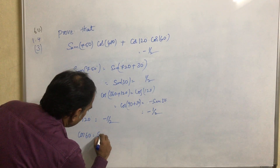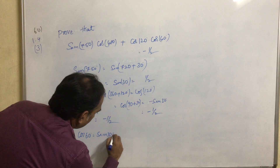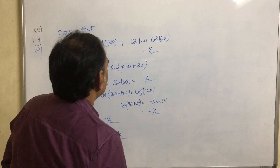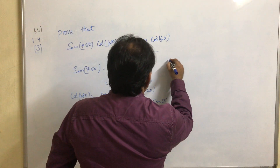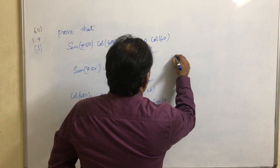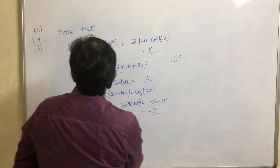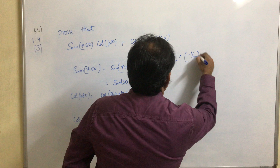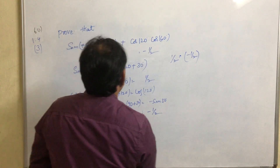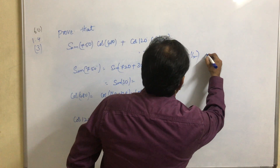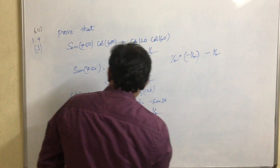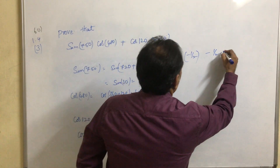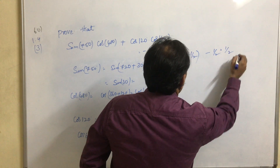cos120 equals minus 1 by 2, so no need to find it again. cos60 equals sin30, which equals 1 by 2. Substituting all values: sin750 = 1/2, cos480 = minus 1/2, cos120 = minus 1/2, and cos60 = 1/2.